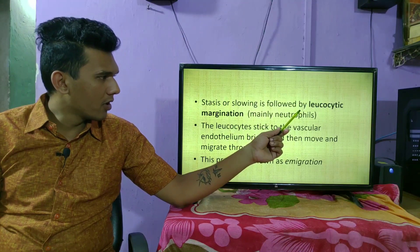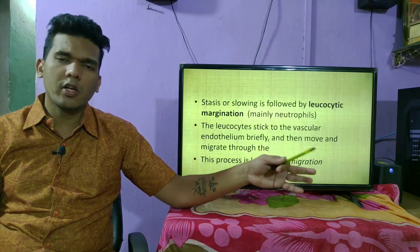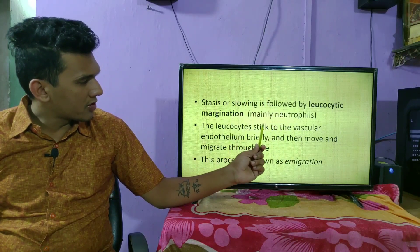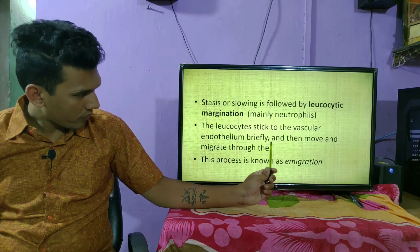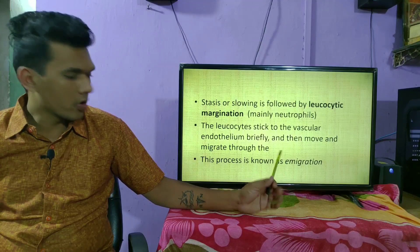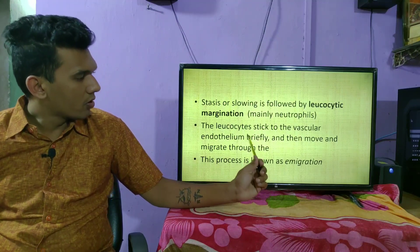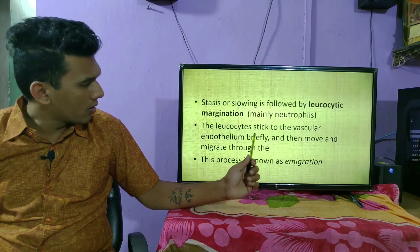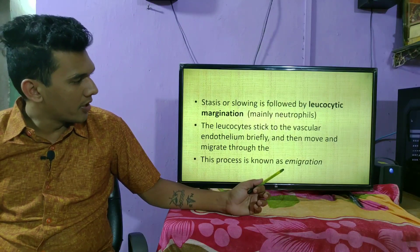Stasis or slowing is followed by leukocytic migration — mainly neutrophils, which are white blood cells serving as our immune cells. The immune cells migrate to the acute inflammation area; the leukocytes stick to the vascular endothelium briefly and then move and migrate through it. This process is known as immigration, and we will see it in further detail in upcoming sessions.